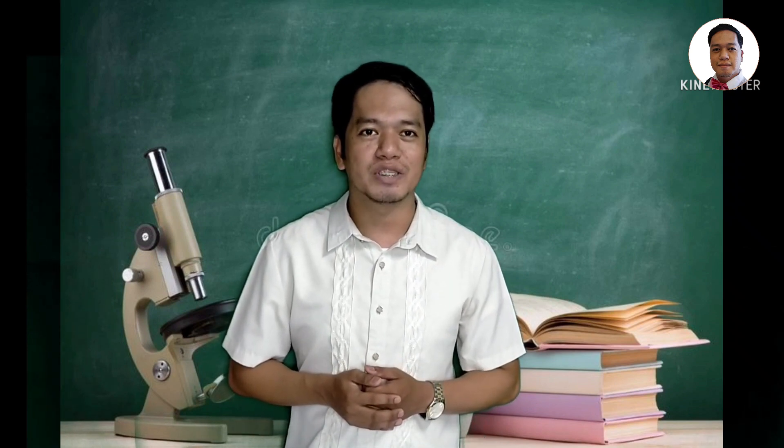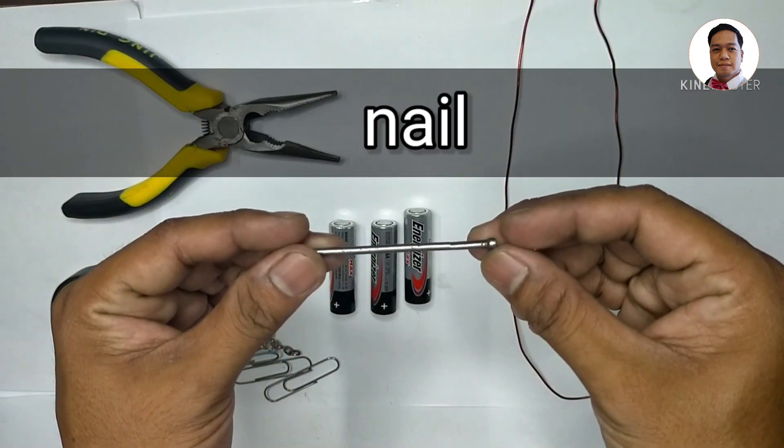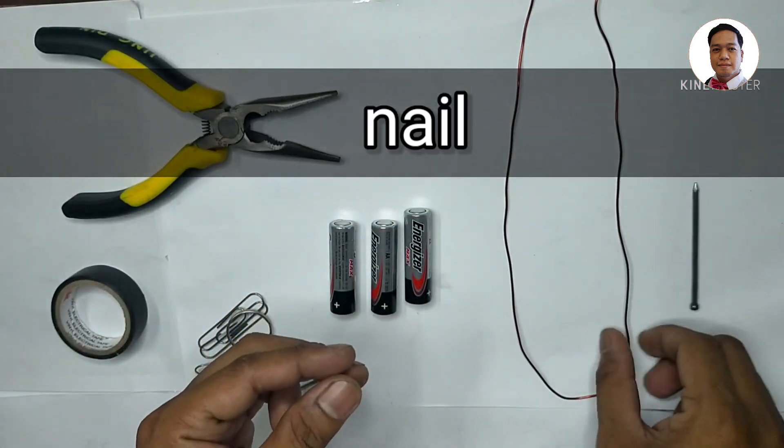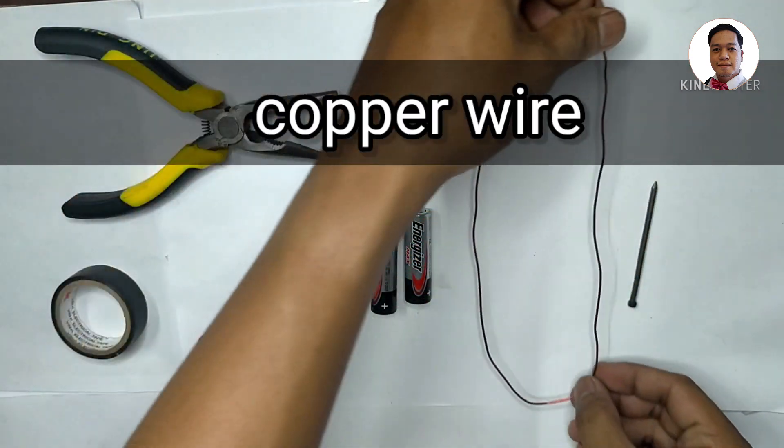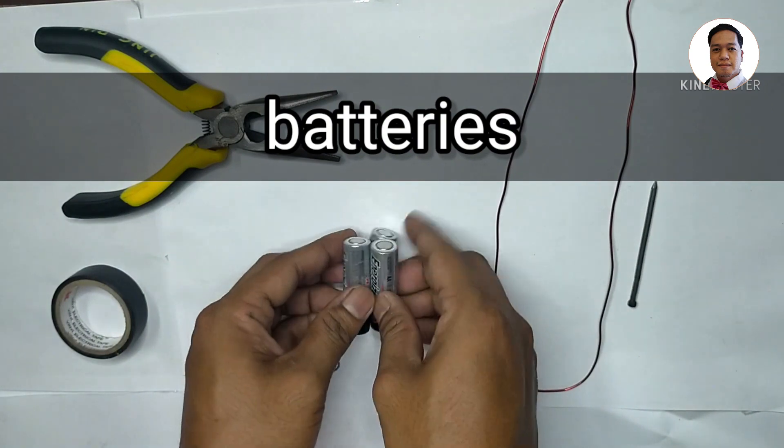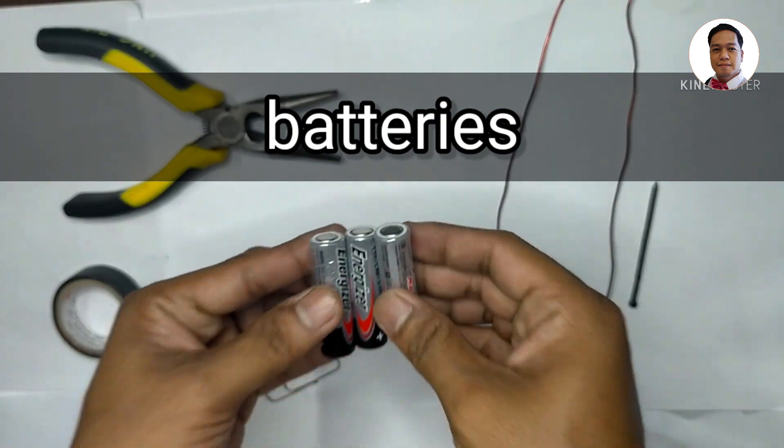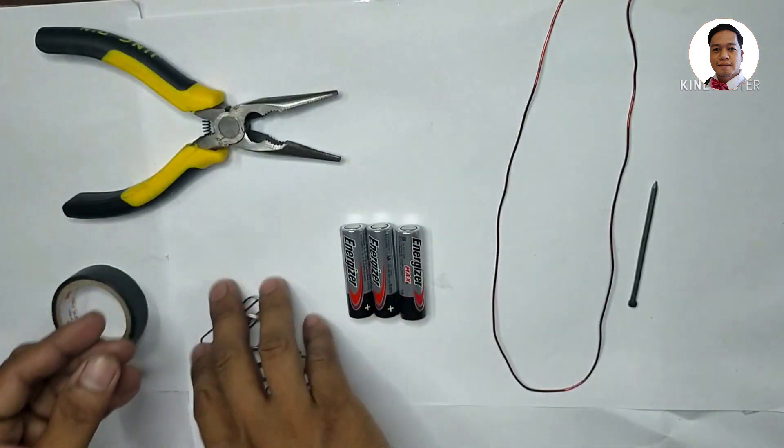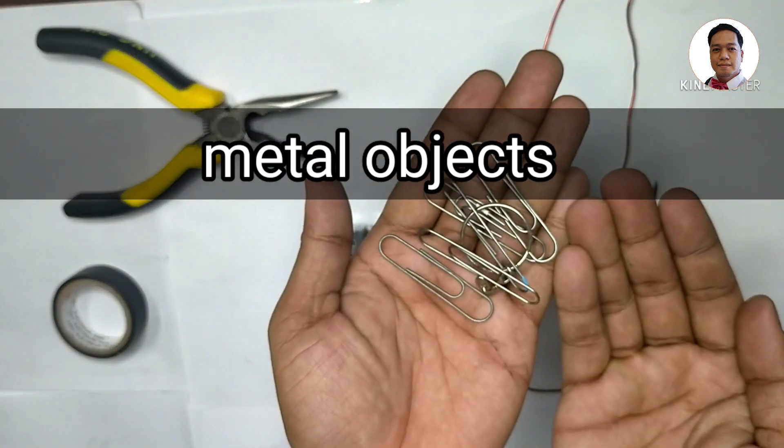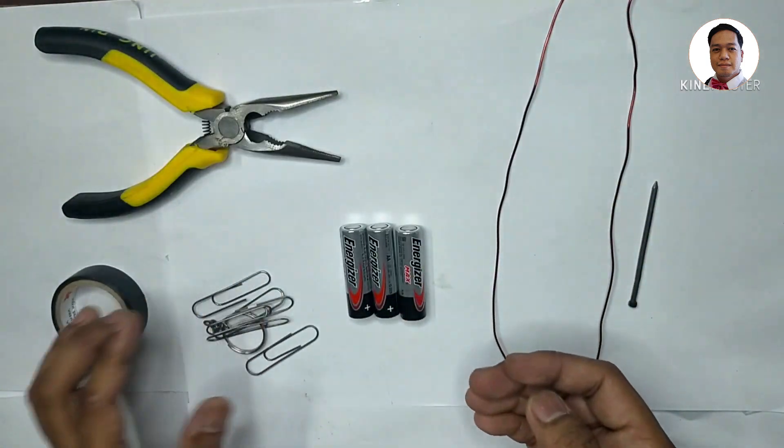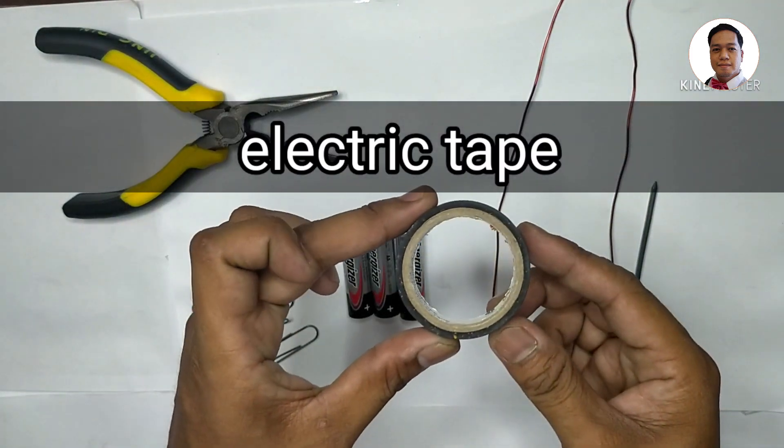Are you ready to make your own magnet? But before we proceed to our activity, I want you to prepare the following materials: nail, copper wire, batteries, metal objects, electric tape.